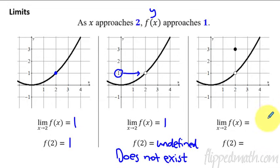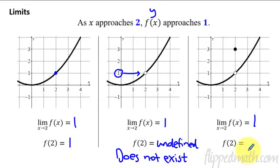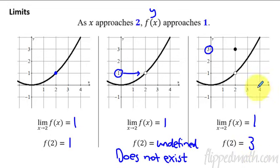In the next example, we're doing the same thing — as x approaches 2 from both sides, the y value is approaching 1. But this time, the function itself at x equals 2 has an actual value, which is up here at 3. So the function is defined at x equals 2 in this case, but it's not the same as the limit. The limit on this one is not the same as the value of the function.